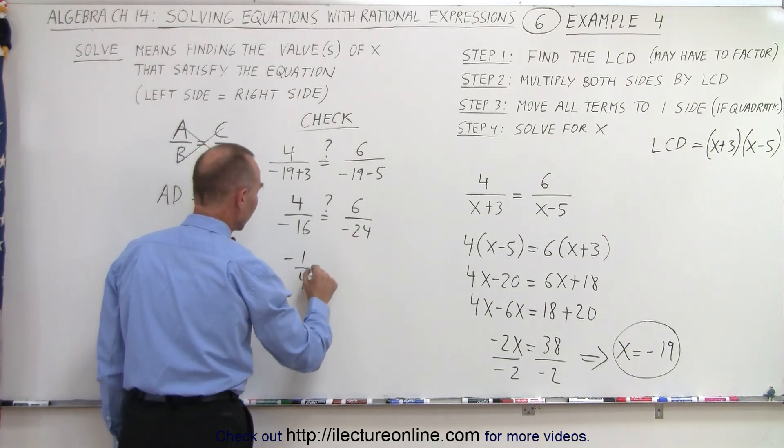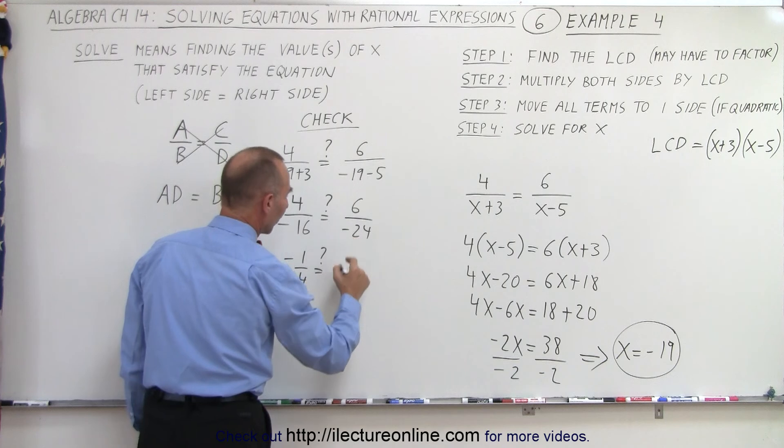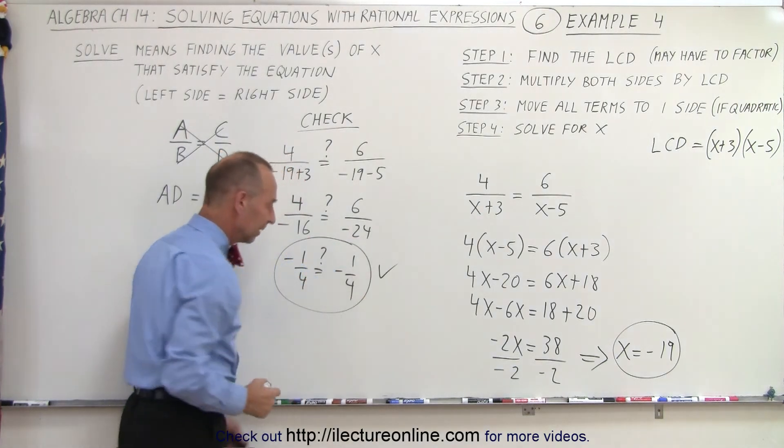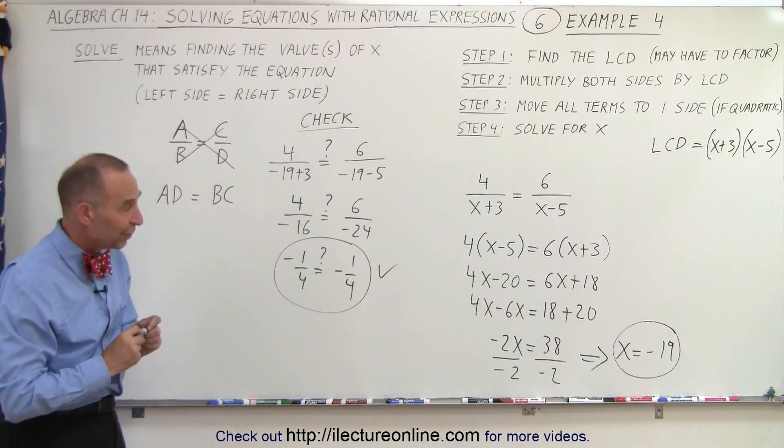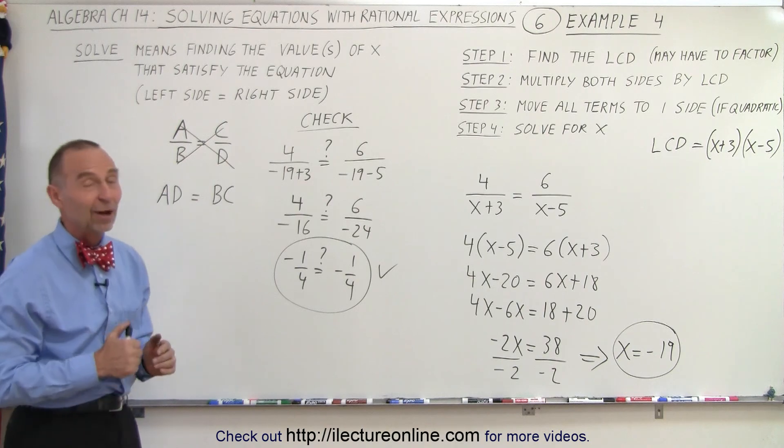So, negative 1/4. Is that equal to? 6 goes into 24 one-fourth times. So, negative 1/4. And sure enough, you can see that the left side does equal the right side if we plug in x equals negative 19. And that is how it's done.